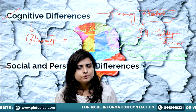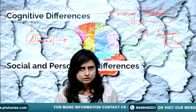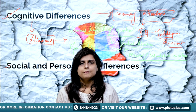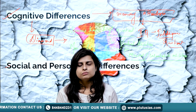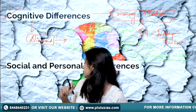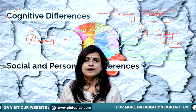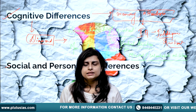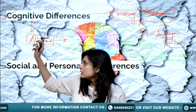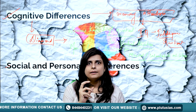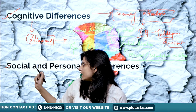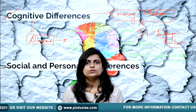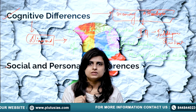However, certain researchers were of the opinion that while cognitive and biological parameters might exist, you cannot ignore the fact that social and personality differences have a huge impact on both men and women. Social and personality differences are talking about how these two genders — men and women — are raised and shaped by society.